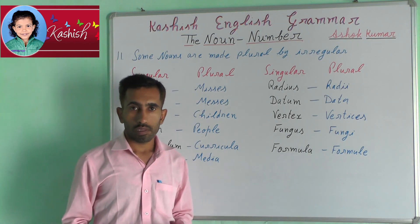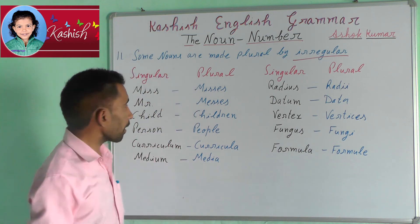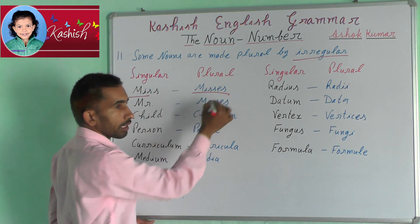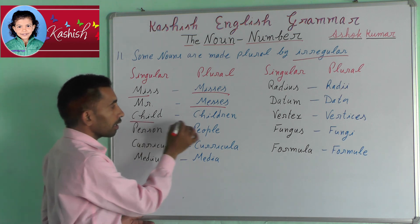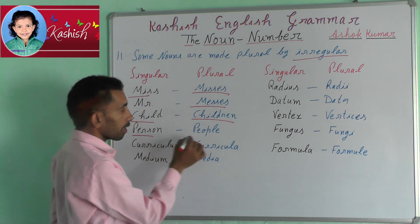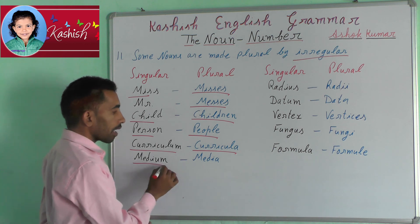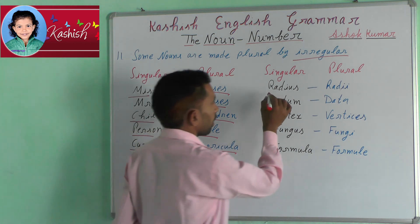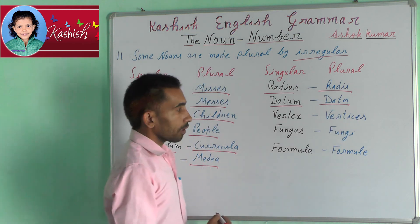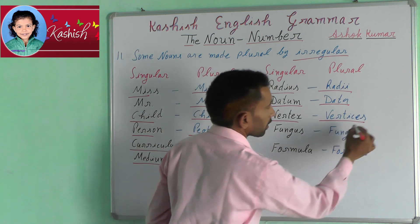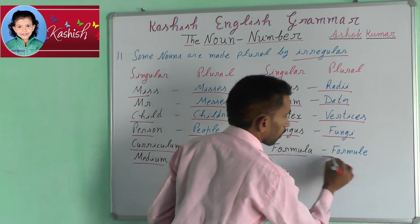Eleventh rule: some nouns are made plural by irregular forms. For example: Miss → Misses, Mister → Misters, child → children, person → people, curriculum → curricula, medium → media, radius → radii, datum → data, vertex → vertices, fungus → fungi, formula → formulae.